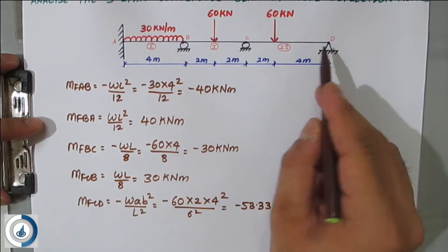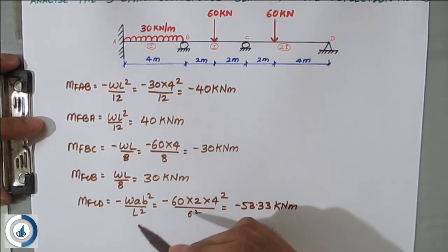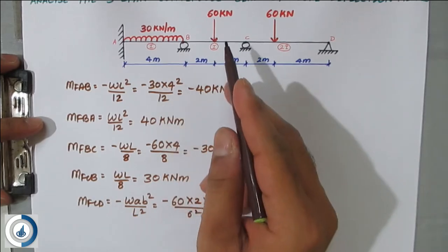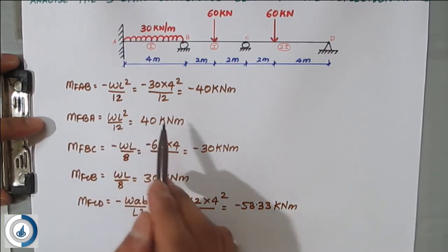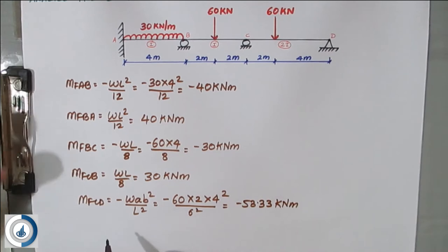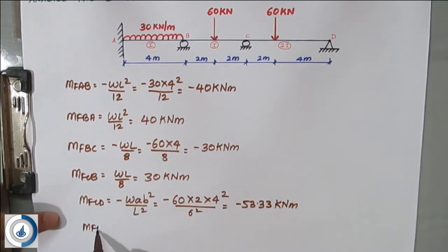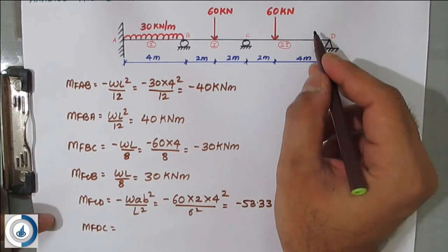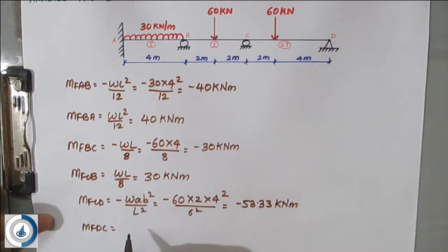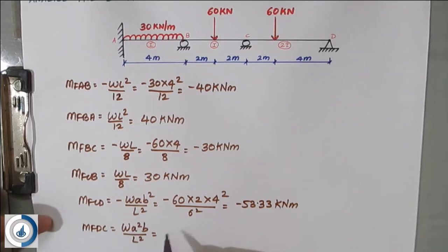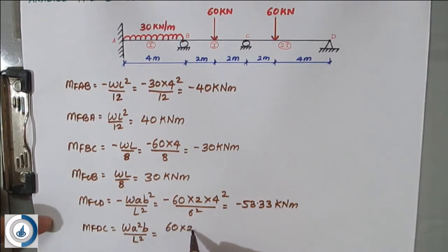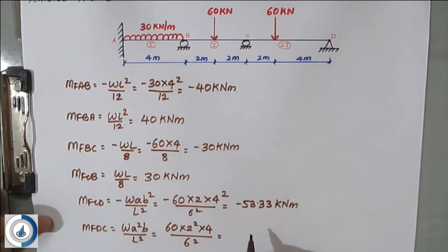For MF_DC the sign is positive, but unlike the UDL and central point load cases, the formula changes. Here MF_DC = +w·a²·b/L². You have to carefully remember this. Substituting: 60×4×4/36 = 60×2²×4/6² = 26.67 kN·m.